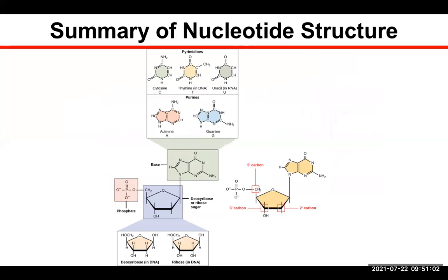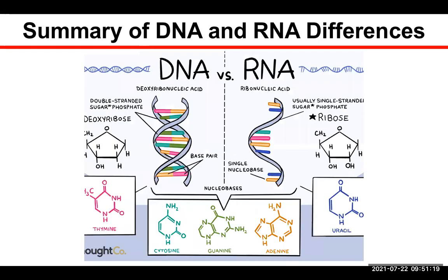Here's a summary of the different nucleotides. Remember the differences between purines and pyrimidines. Understand the concept of 5' to 3' and what that means. Understand the main differences between the sugar groups in RNA versus DNA. Understand the nucleotides that differ between them and the other key things highlighted in the lecture.